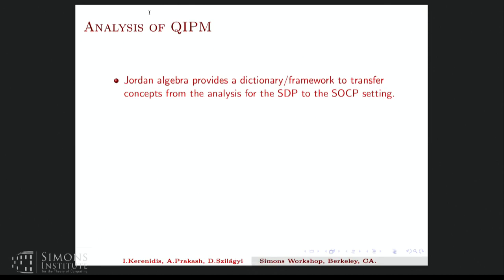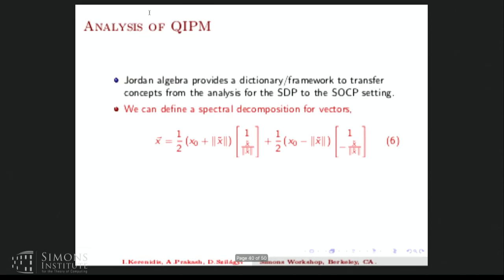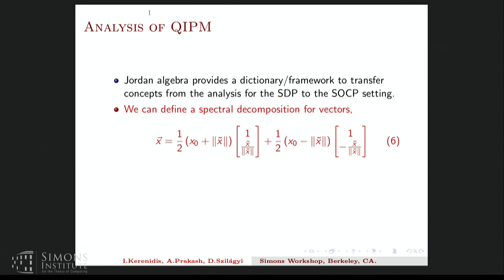So the analysis of the quantum interior point method for the SOCP is basically done using these Jordan algebras which also provides a unified analysis in the classical setting for SDPs and SOCPs. So the interesting part is that like the spectral decomposition for matrices, one can have a spectral decomposition using the Jordan algebra where there are exactly two eigenvalues. And this applies to the vectors in the Lorentz cone. So the Lorentz cone serves as the cone of the vectors which have all the eigenvalues positive. And we can define analogues for all the matrix quantities like the spectral norm which is larger of the two eigenvalues and the Frobenius norm which is the sum of squares of the two eigenvalues.